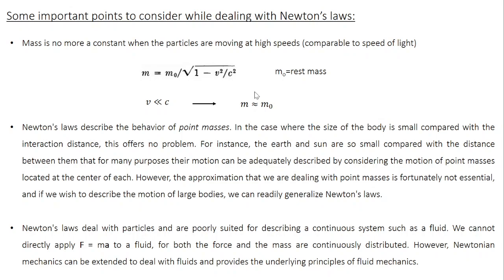Most classical mechanical systems we encounter in day-to-day life have velocities very small compared to the speed of light. For example, even the fastest supersonic jet on Earth moves at around 1000 meters per second, which is far less than 3×10⁸ meters per second. When v is much smaller than c, the term v²/c² becomes almost zero, so M is almost the same as M_0. For all practical purposes, we can assume that the mass of the object is constant.